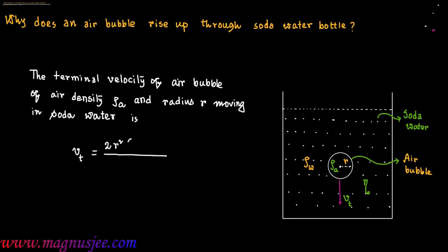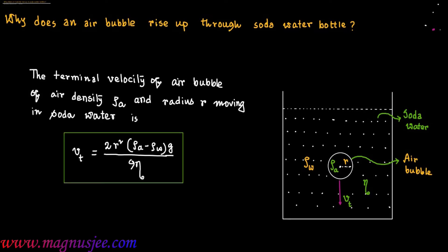The terminal velocity of an air bubble of density rho_a and radius r moving in soda water is given by: vt = r² (ρa − ρw) g / 9η. This is Equation 1.